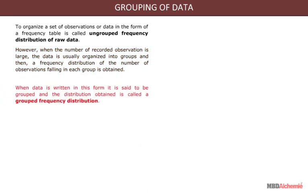When the data is written in this form, it is said to be grouped, and the distribution obtained is called a grouped frequency distribution.